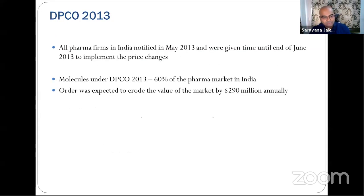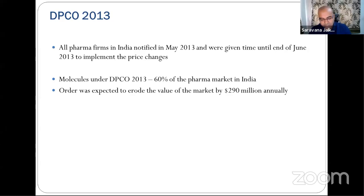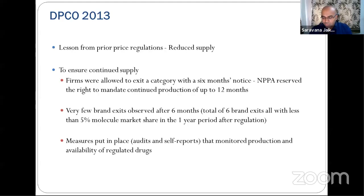All pharma firms were notified in May 2013 and given until end of June — approximately 45 days — to implement price changes. The 348 regulated molecules constitute about 60% of the pharma market, and the government expected the order would reduce market value by $290 million. The DPCO also placed conditions to prevent reduced supply: firms could exit a category but had to give six months' notice, and NPPA could mandate continued production for up to 12 months.